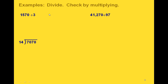So 1,570 divided by 3. Remember, whichever number comes first is the one that goes under the division sign. First we're going to compare the 3 to the first number — it's actually larger than 1, so we go over to the next place. We're going to look at 3 and 15, and 3 goes into 15 five times. You have to be very careful to line up your columns correctly.